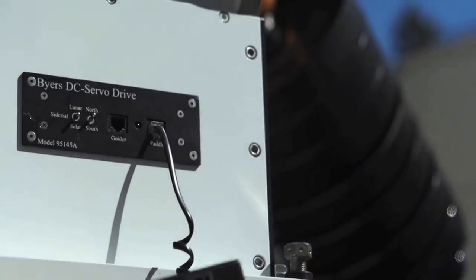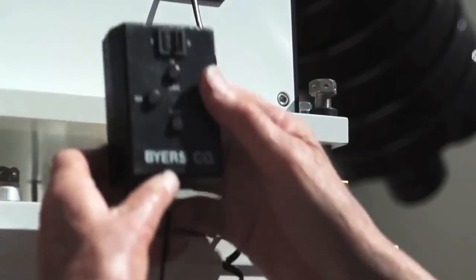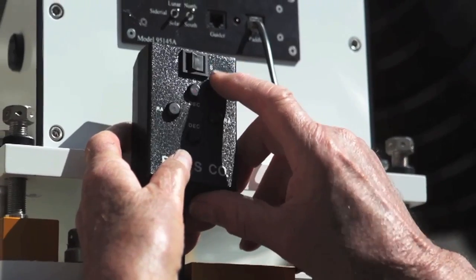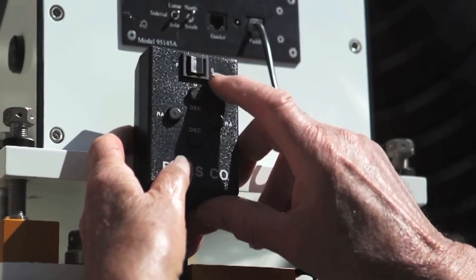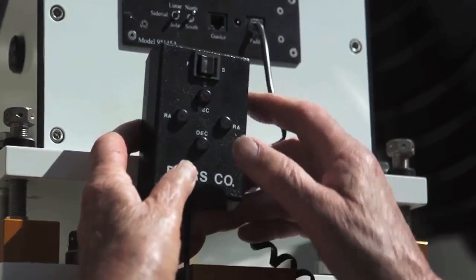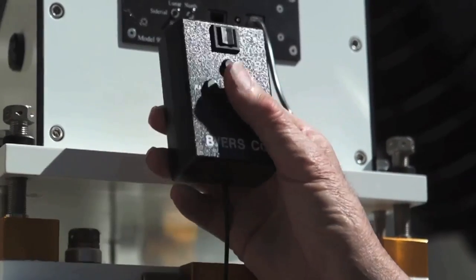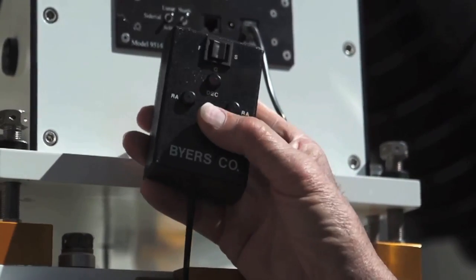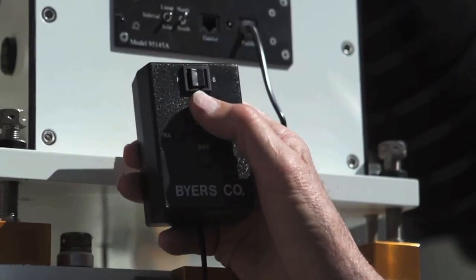The hand paddle also has additional controls. You have F for fast rate, S for the slow rate, and G for guiding in the center. This is a three position switch. These little push button switches are illuminated red in the dark. They're gold contact switches and they're very high quality. They're made in Denmark.